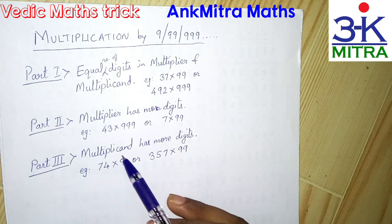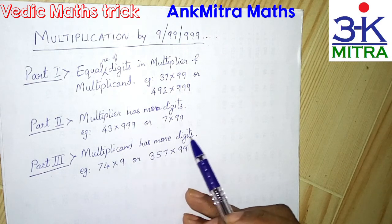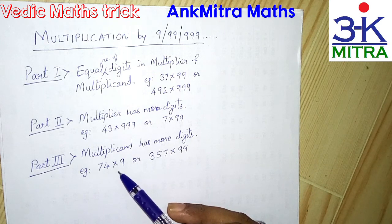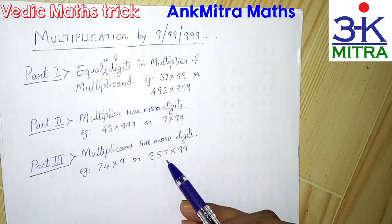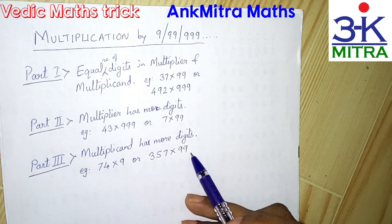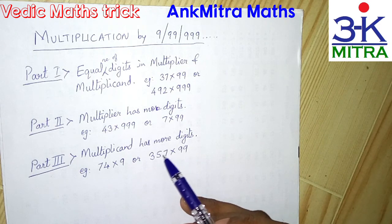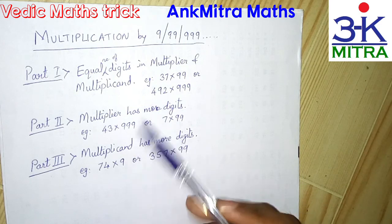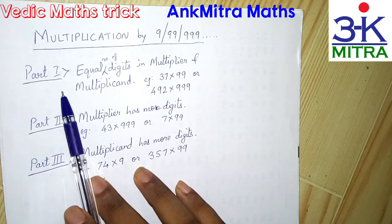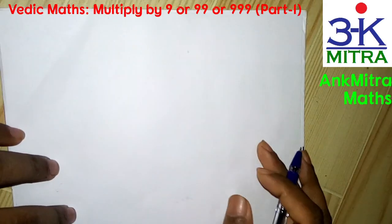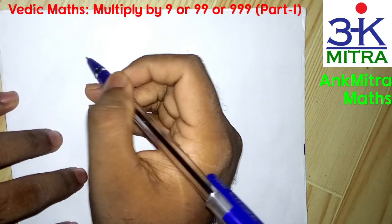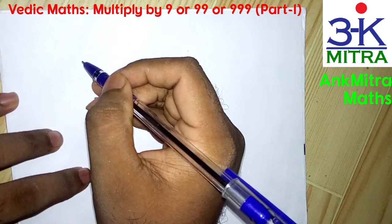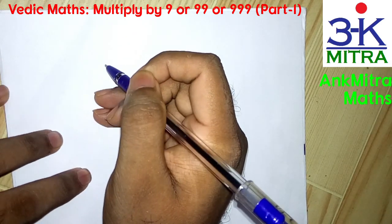In part three I will be showing you the procedure where the multiplicand has more number of digits — examples like a two or three-digit number multiplied by 9, a three-digit number multiplied by 99, or a four-digit number multiplied by 9 or 99. So I distributed this into three parts. Let's focus on part one in this video and look at the examples where we have equal number of digits in both the multiplier and the multiplicand.